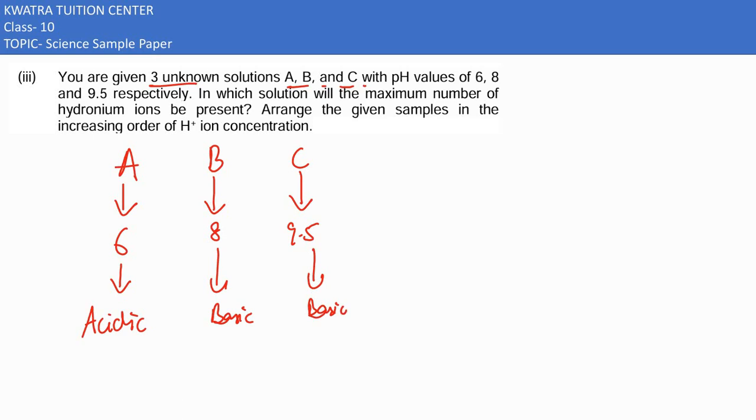Now they are asking us in which solution will the maximum number of hydronium ions be present. Obviously H+ ions would be in an acidic one, so we can understand that solution A would have maximum number of hydronium ions in it. Solution A would be this answer.